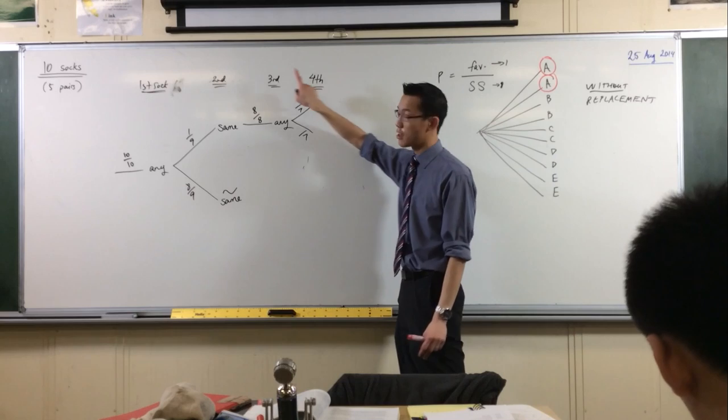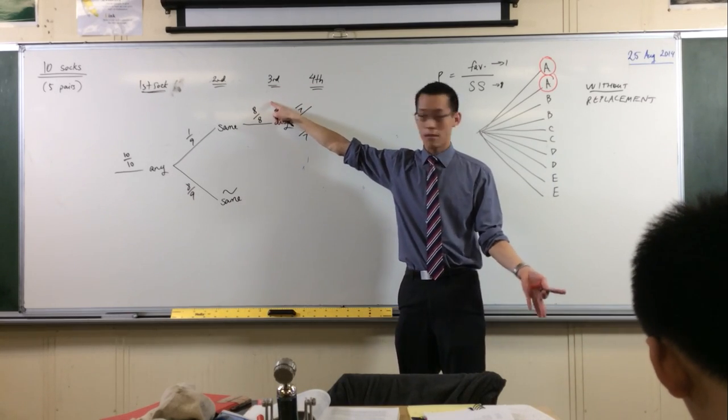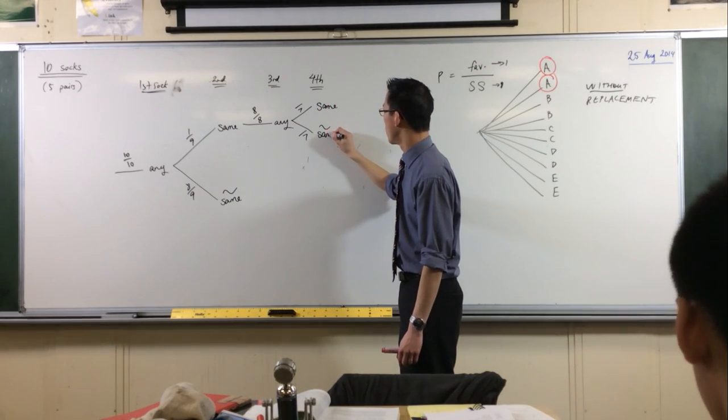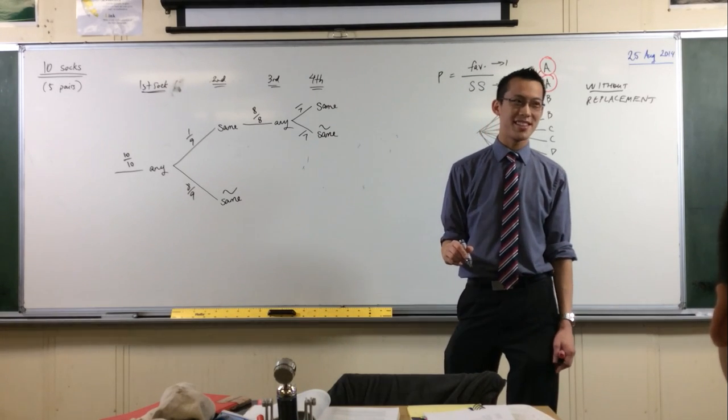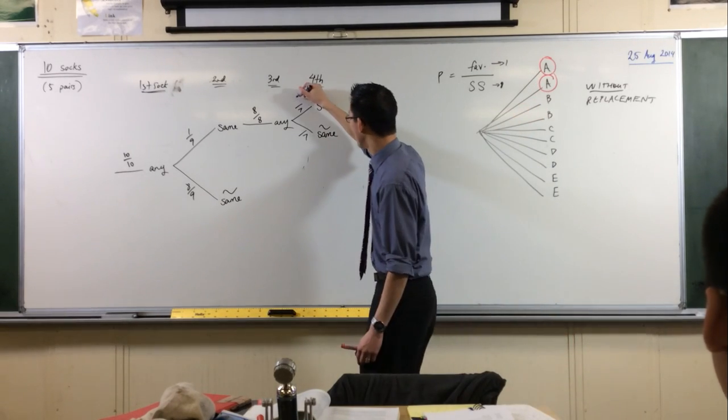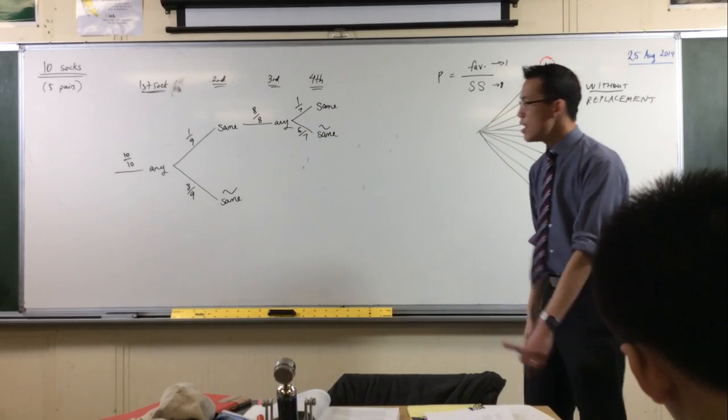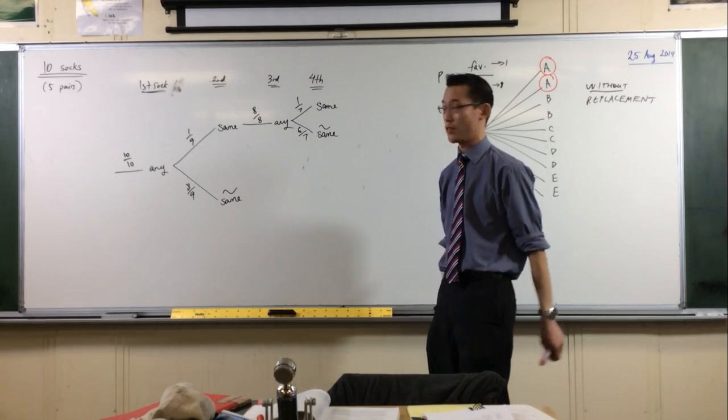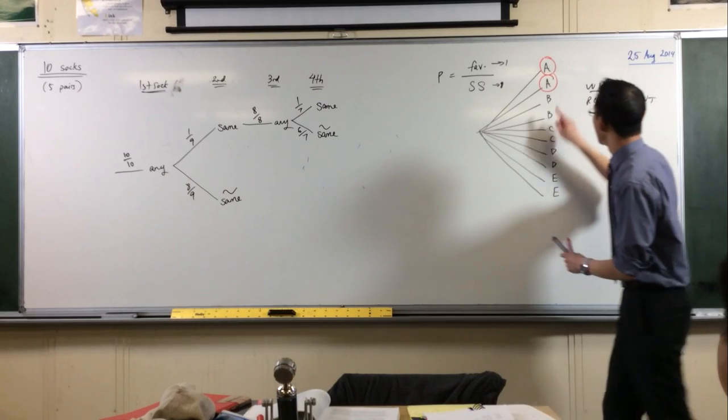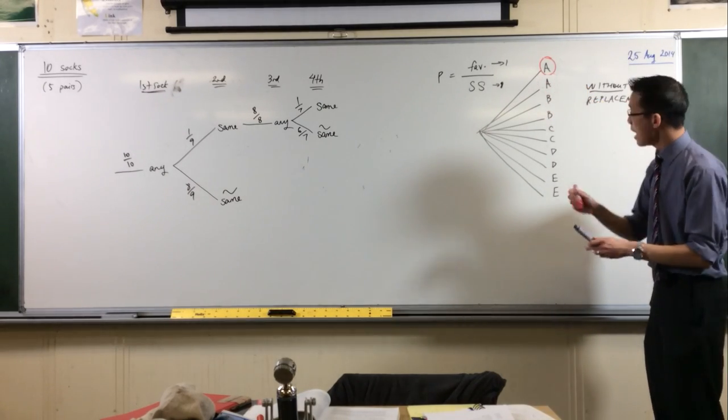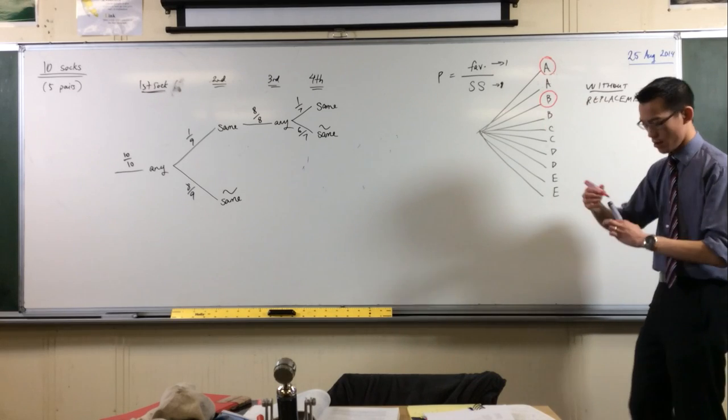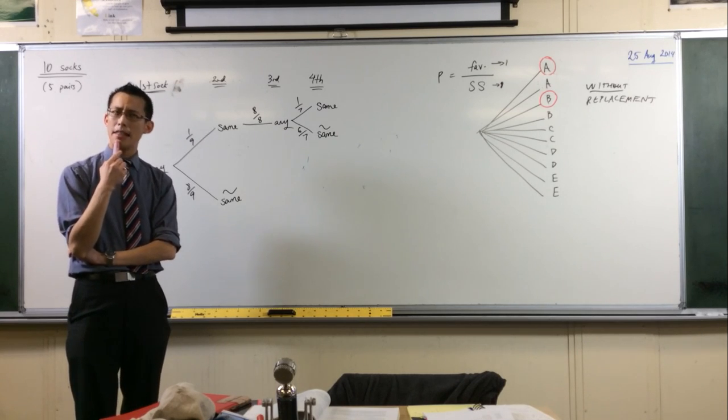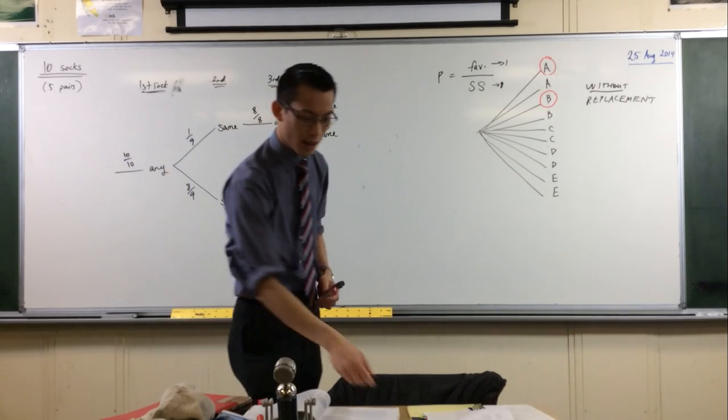Same or not same. How many socks are the same as the one I picked out? One, and then you've got the complement. Now let's come down to this guy, the game changes and this is why it's so important to have the probability tree. I didn't pick socks that are the same, I didn't pick A and A, I picked for example A and B. Pause. Does it matter which of the eight remaining socks that I pick? And the answer is it does matter, it makes a difference.